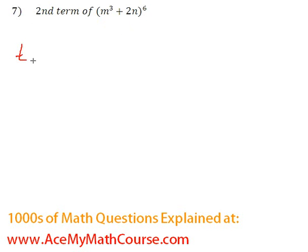And here we go, we're going to use the formula again. The term number is equal to nCk times x to the (n-k) times y to the power of k.